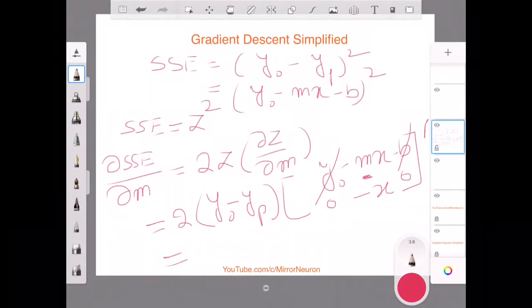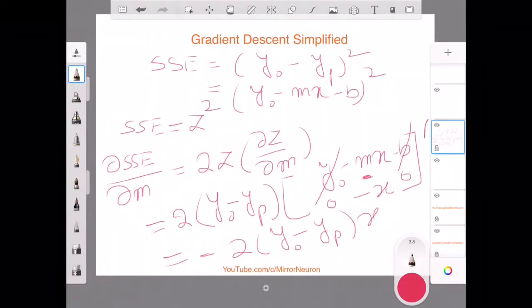So my final result will be minus 2 times y original minus y predicted times x. You can just relate x as the area in square feet. So this is for the change in the SSE with respect to m.